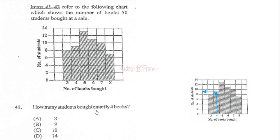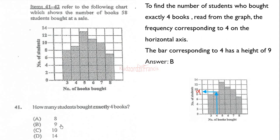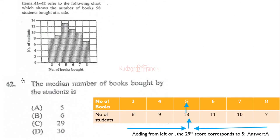To find how many students bought exactly four books, you look at the number of books on the x-axis, find four books, trace it up, and the height of that rectangle corresponds to nine. Therefore the correct answer is option B.